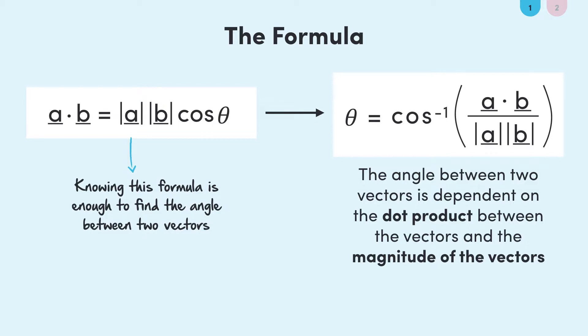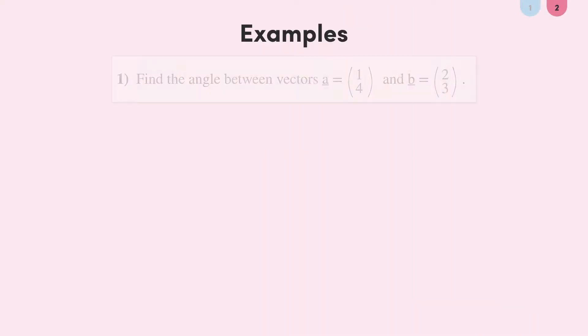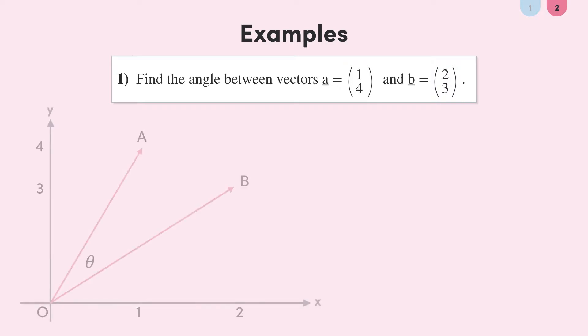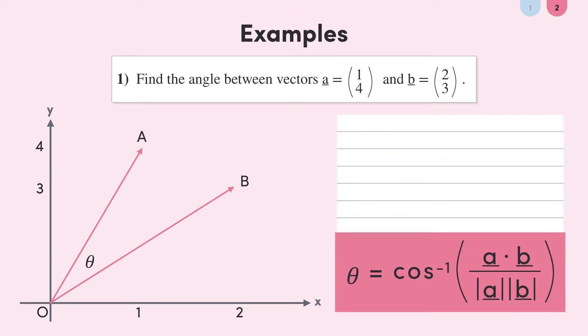The best way to see just how useful this formula can be is through some examples. The first one is as straightforward as it comes. We're given two vectors, a and b. They'll look like this on our plane. If we want the angle between them, we need their magnitude and their dot product. The dot product between a and b can be found using the definition. It's just 1 times 2 plus 4 times 3, 14.